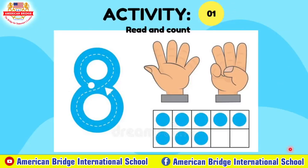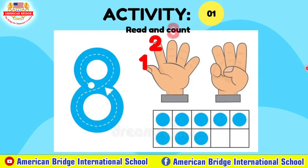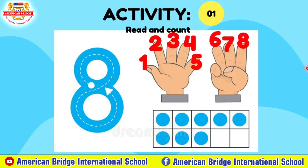Let's move on to our first activity. We need to read and count. So what number is this, everyone? This is number 8. How about the circles? How many blue circles? 1, 2, 3, 4, 5, 6, 7, 8. How about fingers, everyone? Let's count: 1, 2, 3, 4, 5, 6, 7, 8. That's 8 fingers.